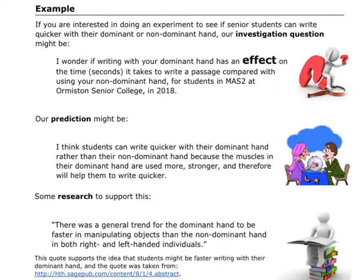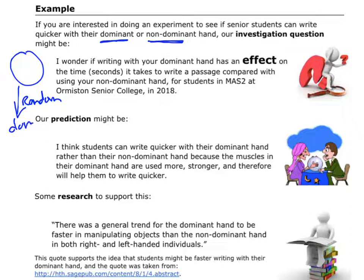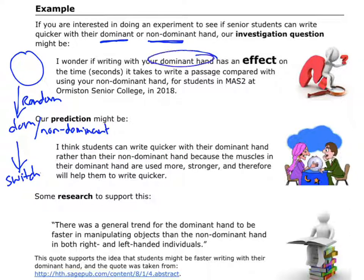Here's an example: say we wanted to know if students can write quicker with their dominant hand or their non-dominant hand. I'm going to take a group of students and randomly choose whether they write with the dominant hand first or the non-dominant hand first. Then they switch and do it the other way around. I'm going to measure the time it takes — students will record how long it takes them to finish writing a passage, using a stopwatch up on the board.